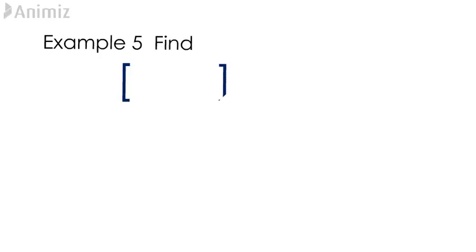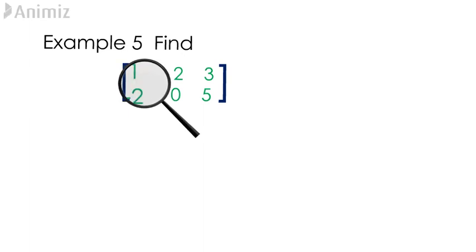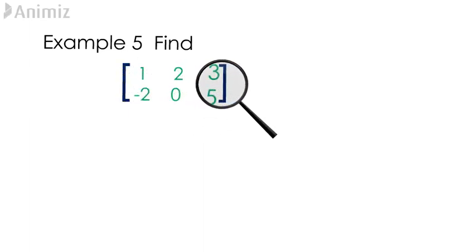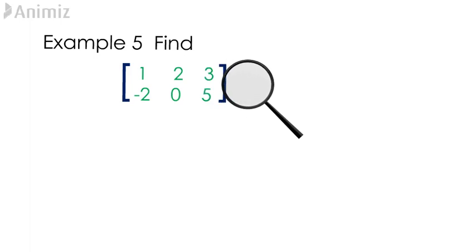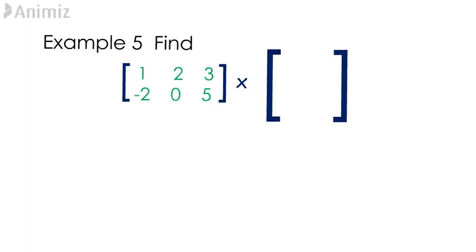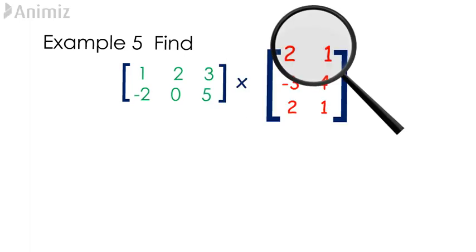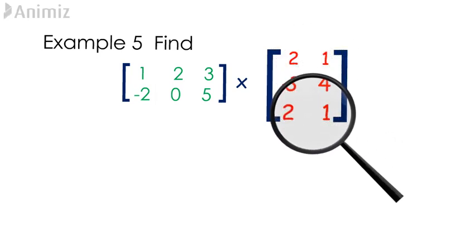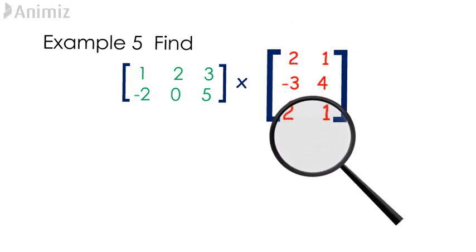Example 5. Find the resulting matrix when the matrix containing the elements 1, 2, 3, negative 2, 0, 5 is multiplied by the matrix containing the elements 2, 1, negative 3, 4, 2, 1.